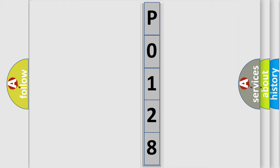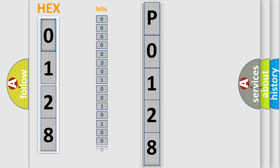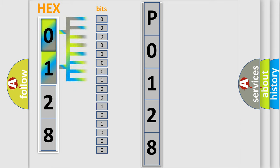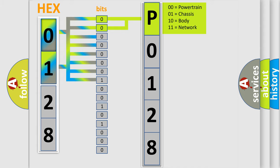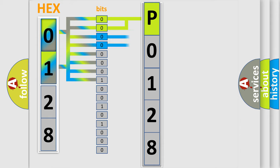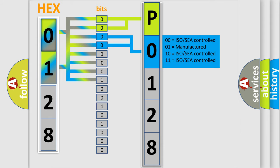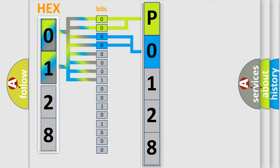The error code is split into two bytes consisting of 16 bits. One bit is the basic unit that each computer works with. The bit has two logical states: zero, low level, and one, high level. By combining the first two bits, the basic character of the error code is expressed. The next two bits determine the second character. The last bits of the first byte define the third character of the code.